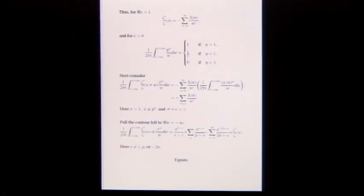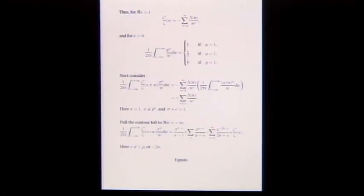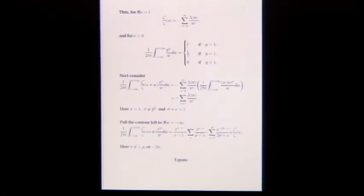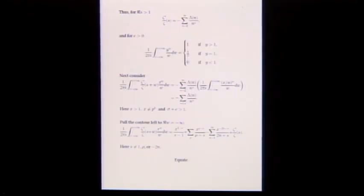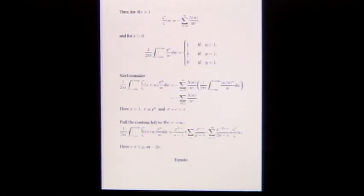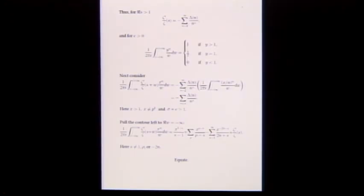We saw the formula for zeta prime over zeta and this integral transform — called an inverse Mellin transform (really Mellin's name). These are the two ingredients. Here's how we prove the explicit formula; this is how you start the proof of all explicit formulas. The special ingredient is what we integrate zeta prime over zeta against — in this case, x to the w over w.